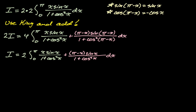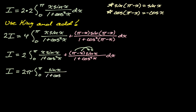Combining the numerators: x·sin(x) plus (pi − x)·sin(x) = x·sin(x) + pi·sin(x) − x·sin(x). The x·sin(x) terms cancel — that's the amazing thing the King procedure does — leaving just pi·sin(x). So 2I equals 4 times pi times the integral from 0 to pi of sin(x) over 1 plus cosine squared of x dx, and factoring, I equals 2pi times that integral.